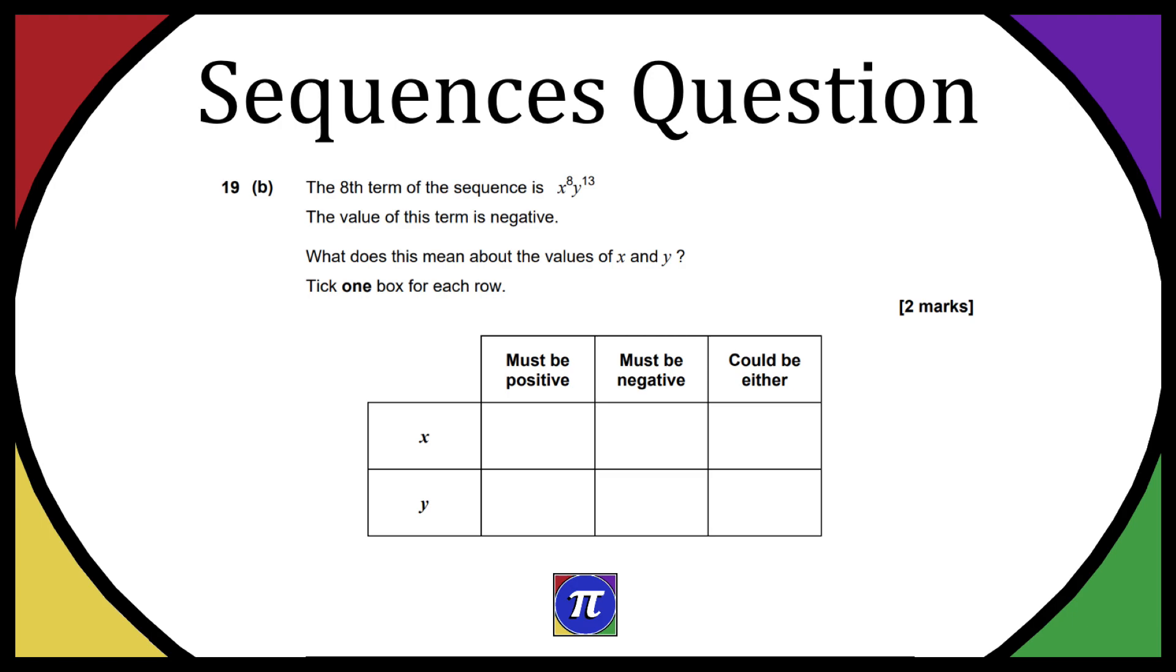We have x to the power of 8. Now because it has an even power it can be a positive or negative value because it's always going to give a positive output. So for example, if you have x squared, you would do negative 2 times negative 2. It's going to be positive 4.